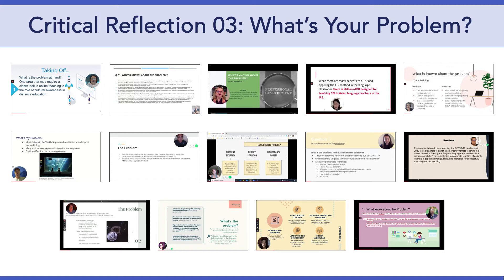Critical Reflection 3 seemed to really get everyone thinking about a complex educational problem they'd like to propose tackling via DBR. Several people are interested in the impact of the pandemic and the sudden shift to mass online learning. Some of you are focusing on student learning, whereas others are focused on teachers, and some on less formal outside-of-school contexts. Topics range from language learning to social media use to cultural awareness and fish identification — a great start all around.